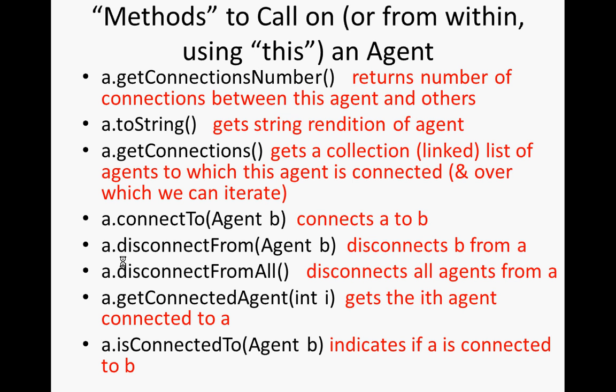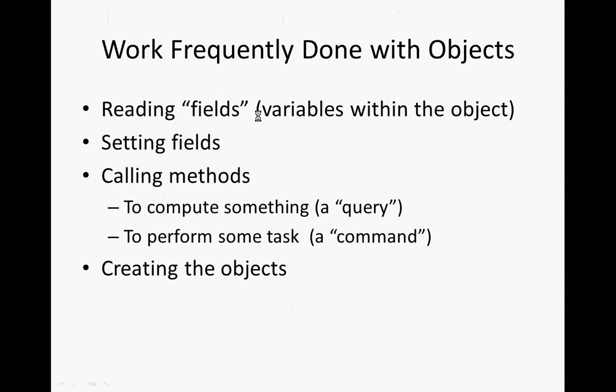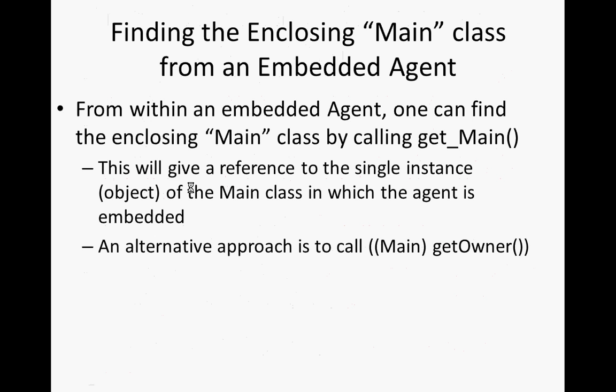These are types of methods that we may call to either compute things or do things. By and large, we try to do only one of those two possibilities in a given method. Its job is either to compute things without changing any state, or to perform a task and change the current state — like changing who Bob's connected to. Doing them separately is considered good practice.